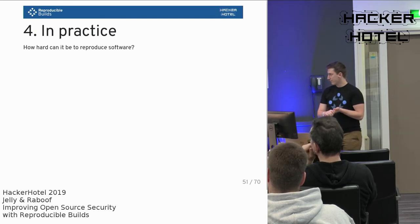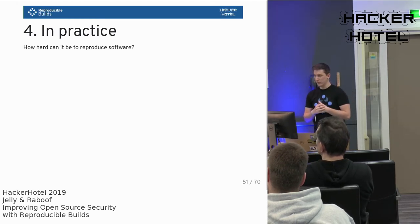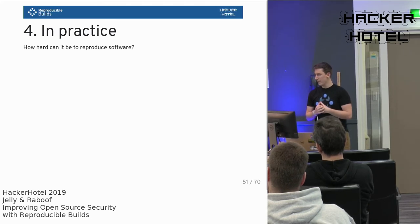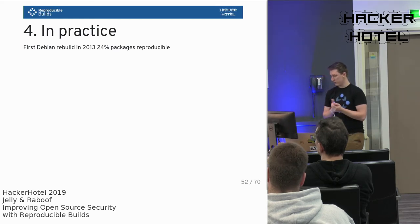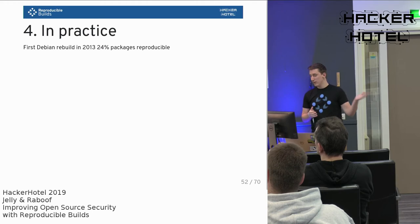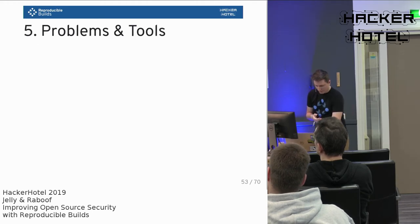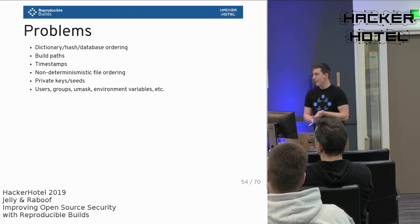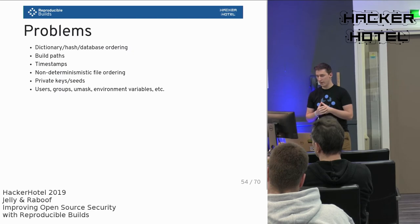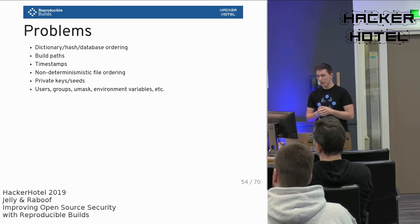Now let's talk about how this works in practice. The reproducible builds concept was started about five or six years ago. How hard can it be to compile software on two different machines and get the same results? Actually pretty hard. The first time Debian attempted this, they got only 24 packages reproducible, and many problems were found, which led to more tooling being developed. The most common sources of unreproducibility include iterating over hash maps — which is non-deterministic, so you need to sort them first — and most compilers recording the build path in your binary for debug builds.